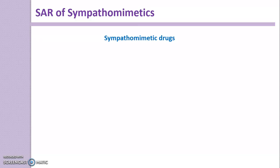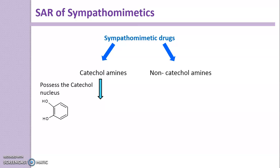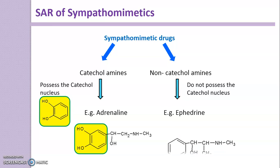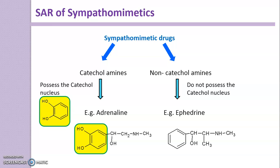Sympathomimetic drugs may be divided into Catecholamines and Non-Catecholamines. Catecholamines possess the Catechol Nucleus — that is, ortho-dihydroxybenzene — where two hydroxyl groups are attached to the benzene ring ortho to each other. Example: Adrenaline, which contains the Catechol Nucleus. Non-Catecholamines do not possess the Catechol Nucleus. Example: Ephedrine, which has only a phenyl ring with no hydroxyl group substitution.